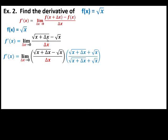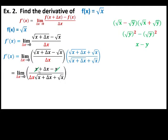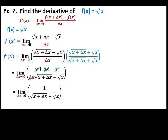Then rationalize the fraction by multiplying the numerator by its conjugate — this is negative, this is positive — and this value is equal to 1. Multiplying the numerator, we are like multiplying the sum and difference of two binomials. Apply it here. Then combine similar terms. Cancel out the common factor on both numerator and denominator. This is now the simplified form.